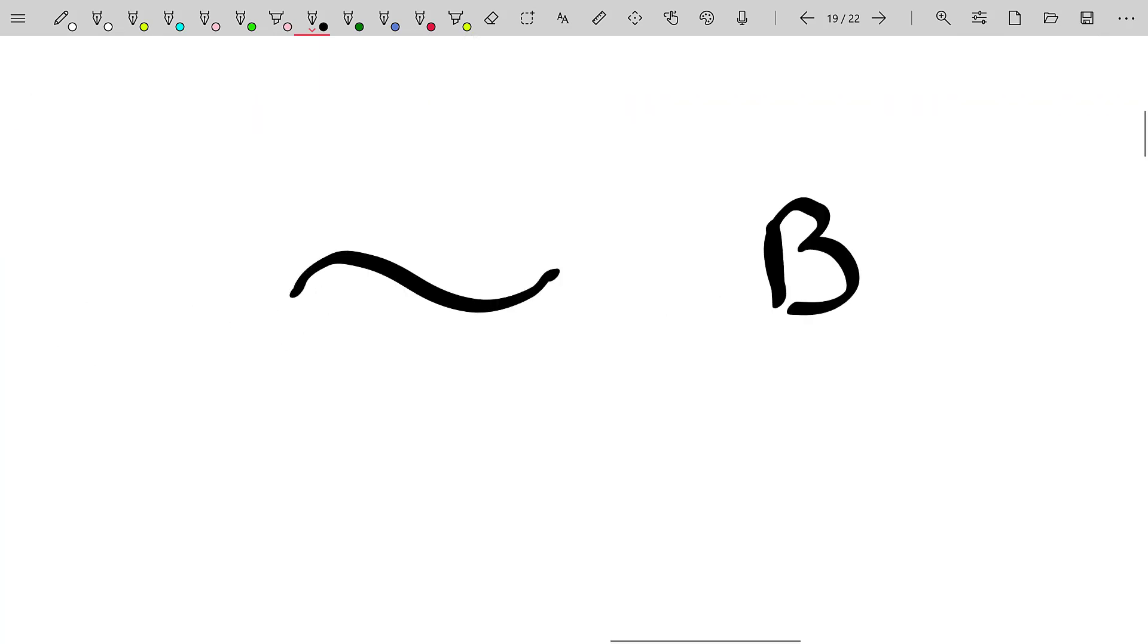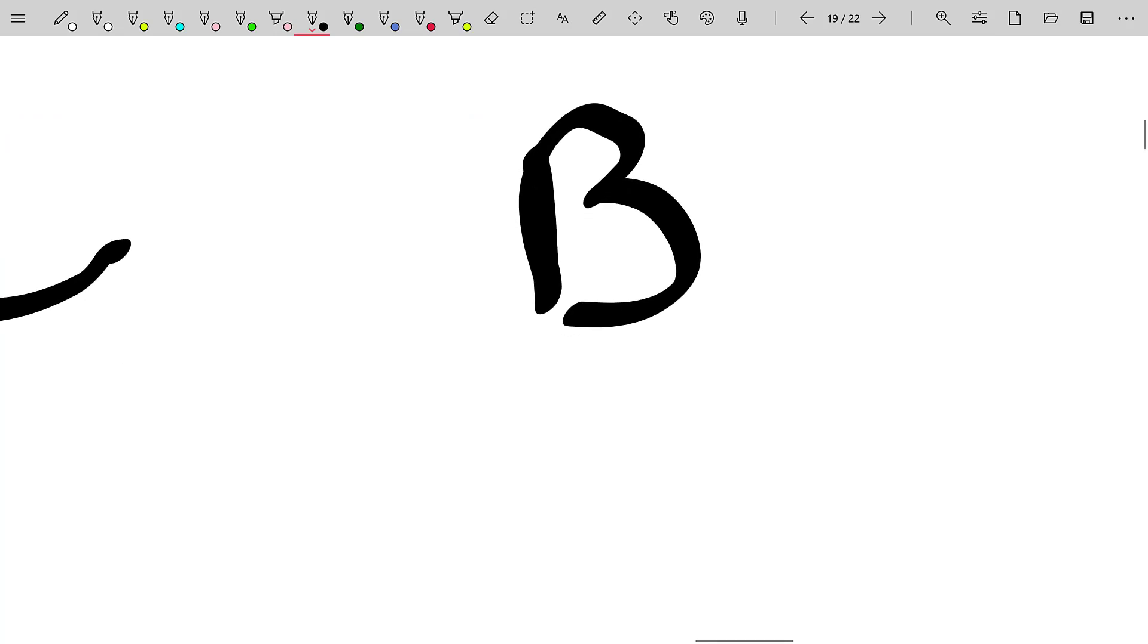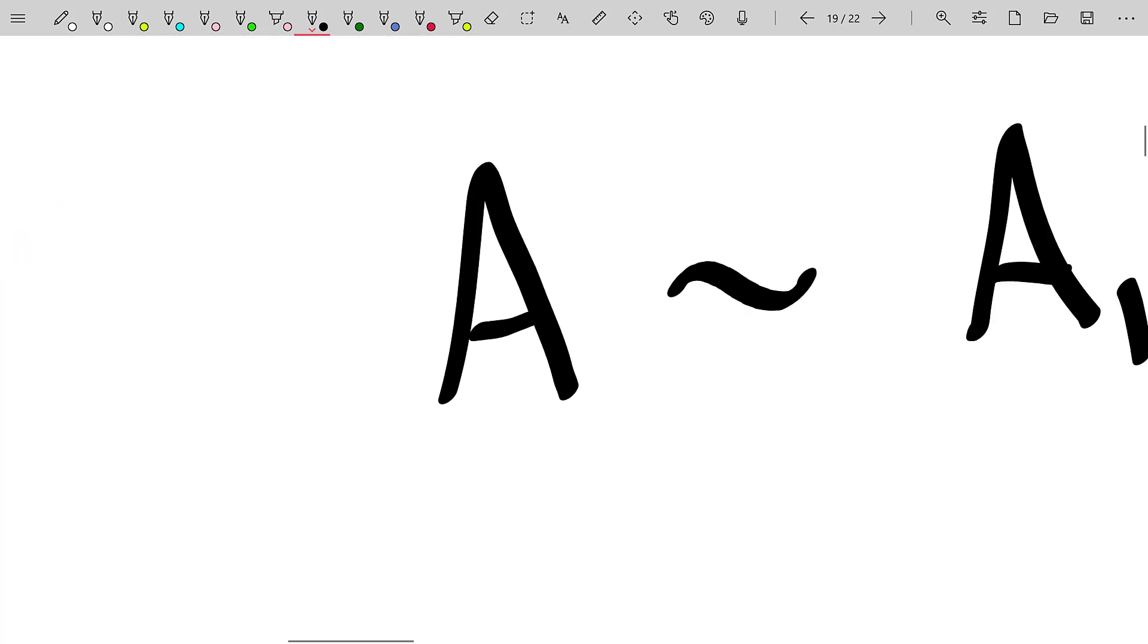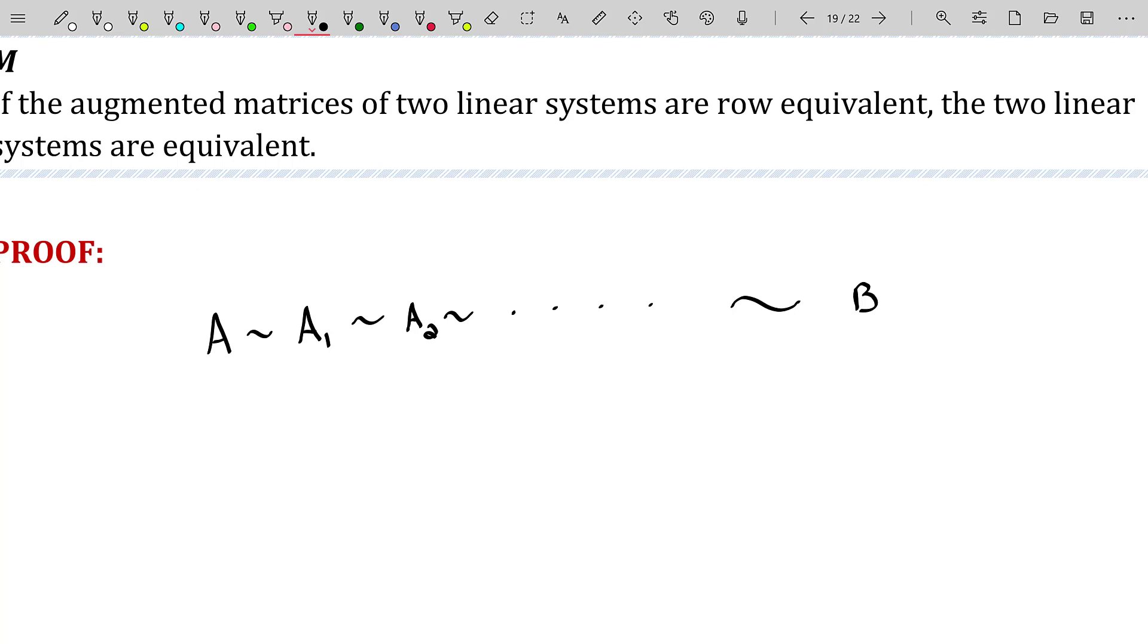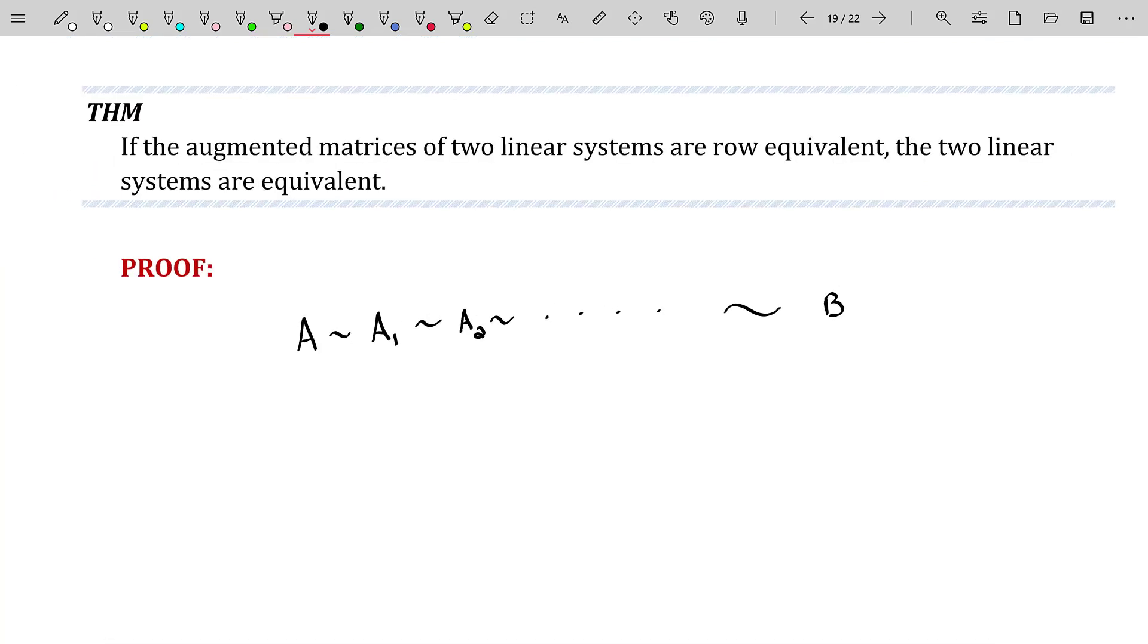Thus, the solutions to the linear system that B represents match the solutions to the linear system that A represents. That is, A and B represent linear systems having a shared solution set. That is, if those augmented matrices of two linear systems are row equivalent, then the two linear systems have the same solution. That is, they are equivalent. That's going to be very powerful as we move forward because you're going to be handed systems and matrices all the time. And sometimes somebody will just say, here's a matrix A and here's a matrix B. They don't look like each other except for size, but guess what? They are row equivalent.